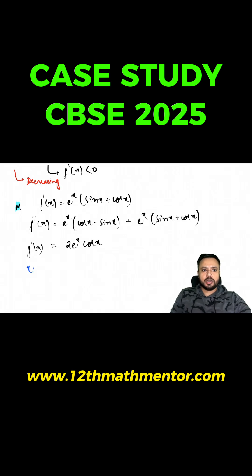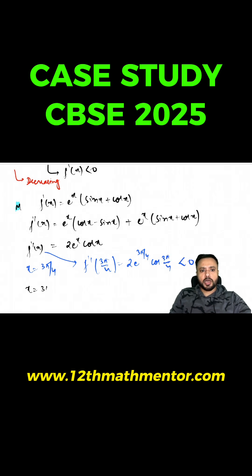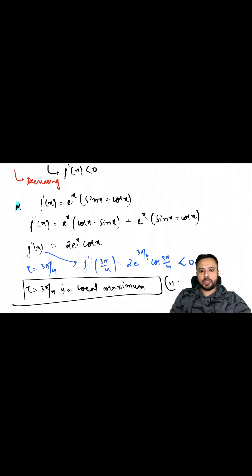The critical point is x = 3π/4. Evaluating the second derivative: f''(3π/4) = 2e^(3π/4) · cos(3π/4), which is clearly less than zero. Since f''(3π/4) < 0, x = 3π/4 is a local maximum. This is the answer for Question 2.